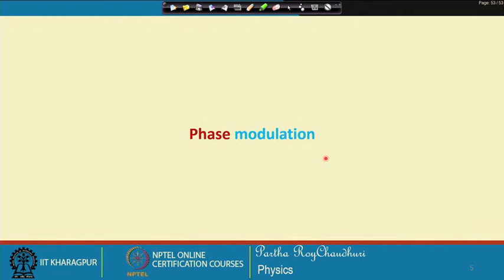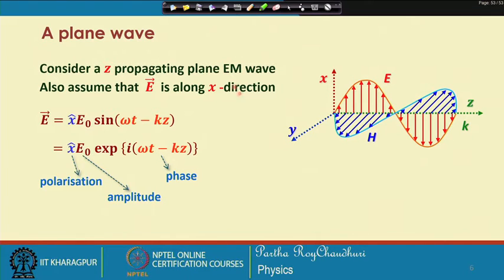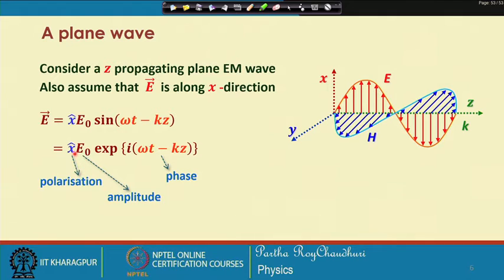Let us try to understand what phase modulation is. We first consider a simple case of a z-propagating plane electromagnetic wave and assume that the electric field vector is oriented along the x direction. We can write this plane wave equation in sinusoidal or exponential phase form. The x-cap indicates polarization, e-naught is the amplitude, and this is the phase factor.